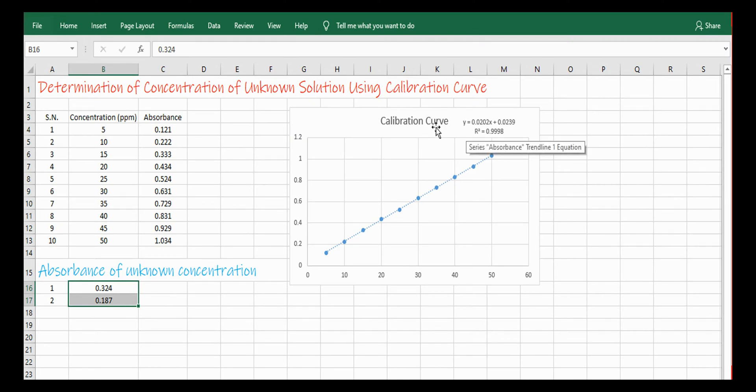simply put the absorbance value in place of y and calculate the value of x. The value of x which you obtain from the calculation using this equation y equals mx plus c is the concentration of your unknown solution.